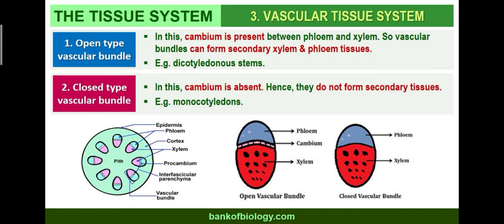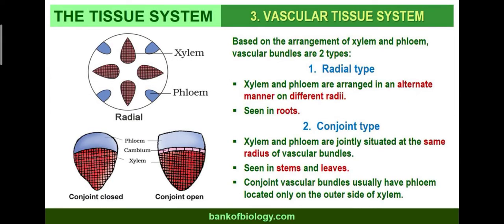In closed-type vascular bundles, cambium is absent, so secondary tissues do not form. This is seen in monocot stems and roots. Based on the arrangement of xylem and phloem, vascular bundles are also divided into two types: radial type and conjoint type. In the radial type, xylem and phloem are arranged in an alternate manner on different radii.